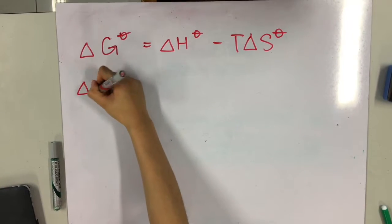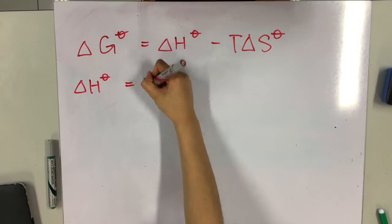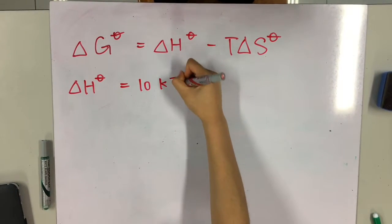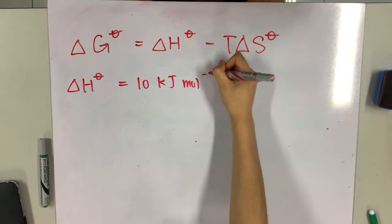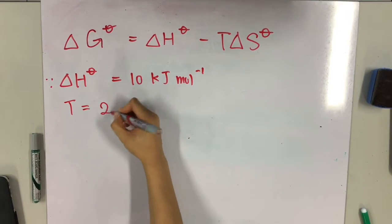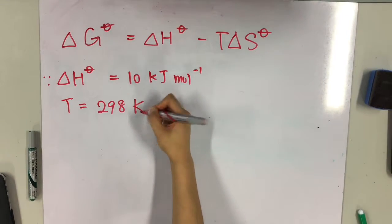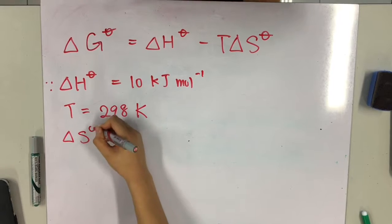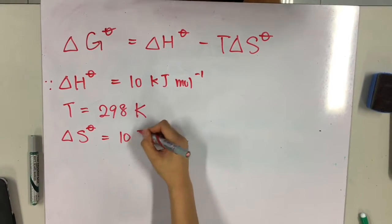Since we're already given from the question that delta H, which is the change in enthalpy, is 10 kilojoules per mole and that the temperature is 298 Kelvin, we also know that delta S, which is the change in entropy, is 10 joules per mole.